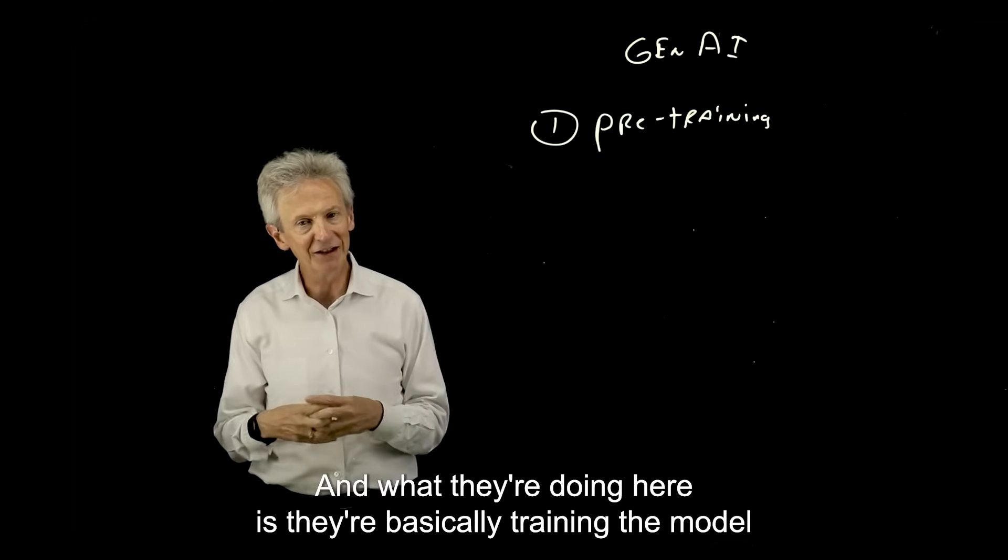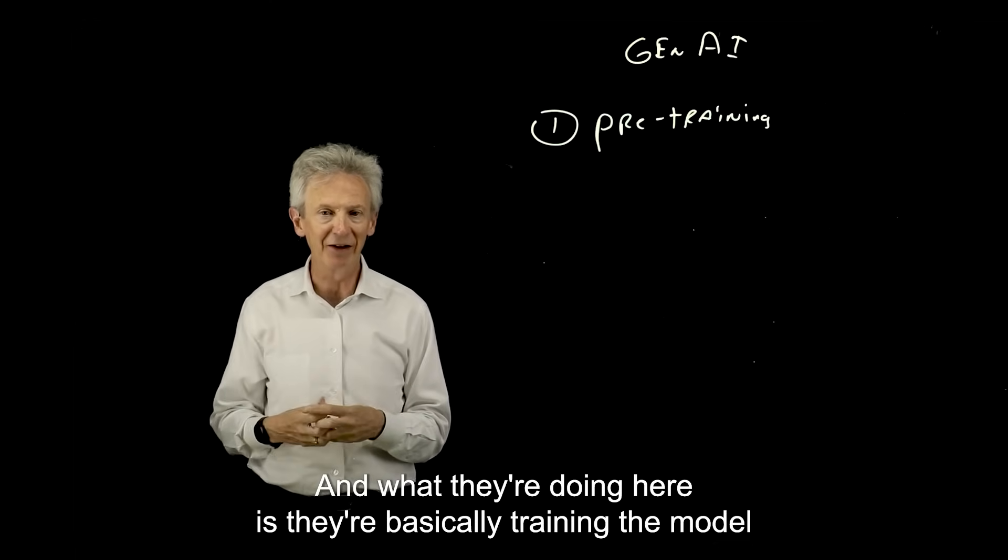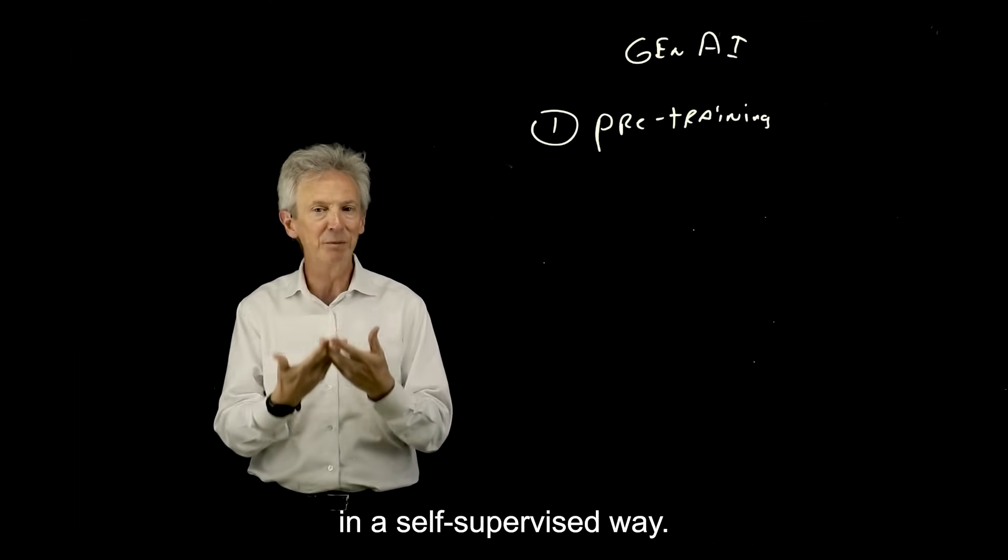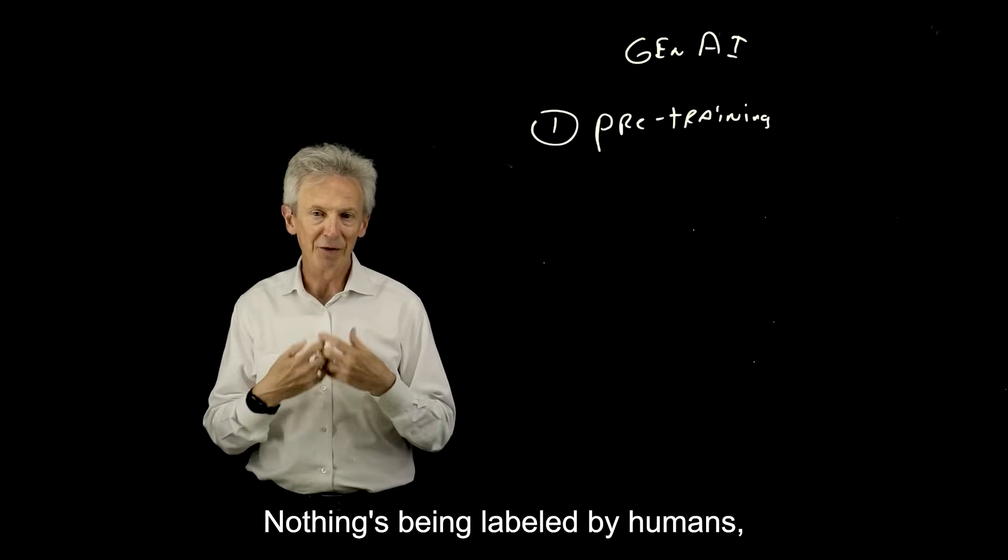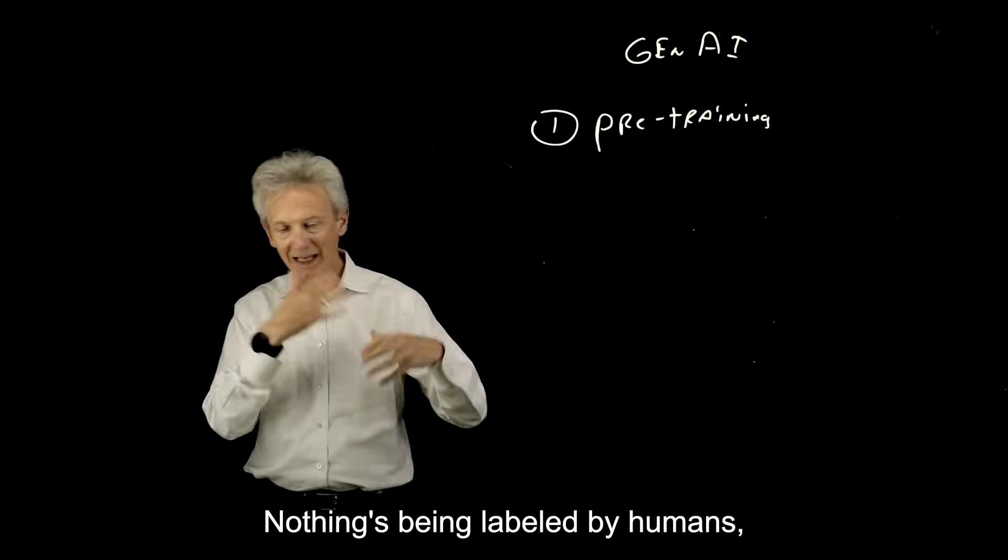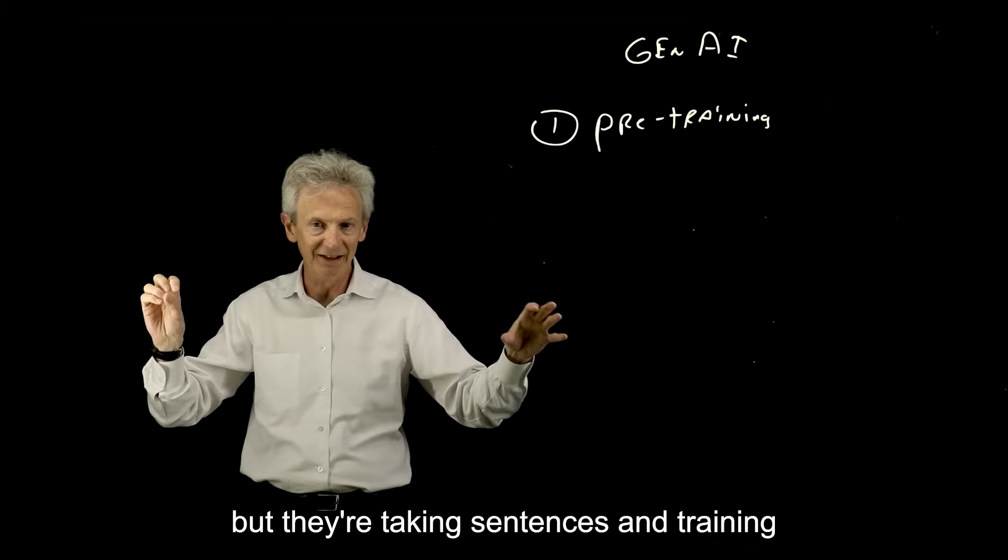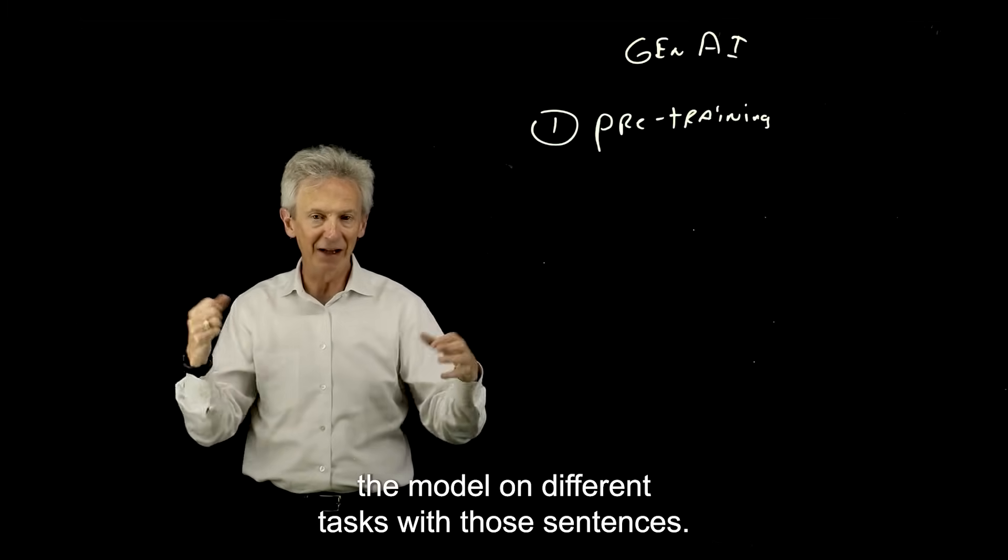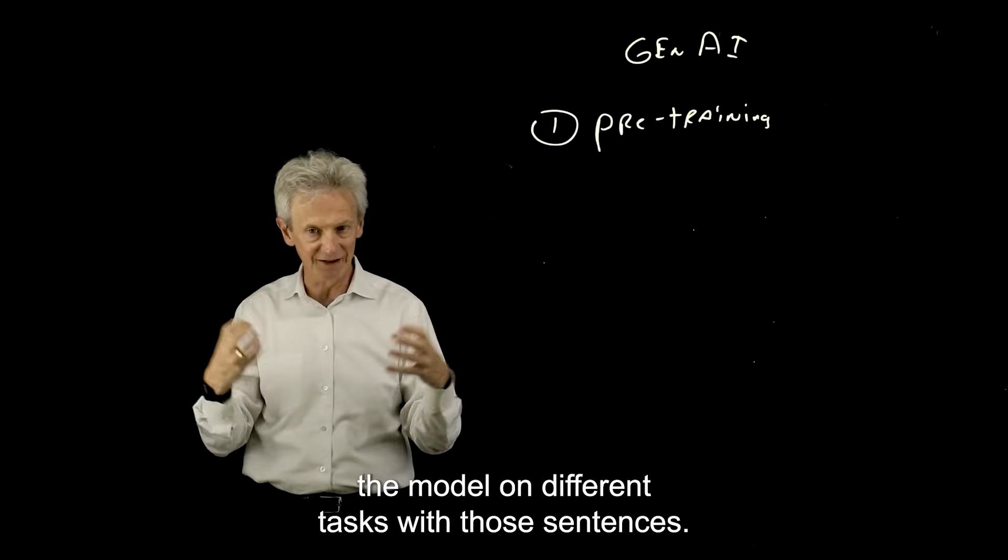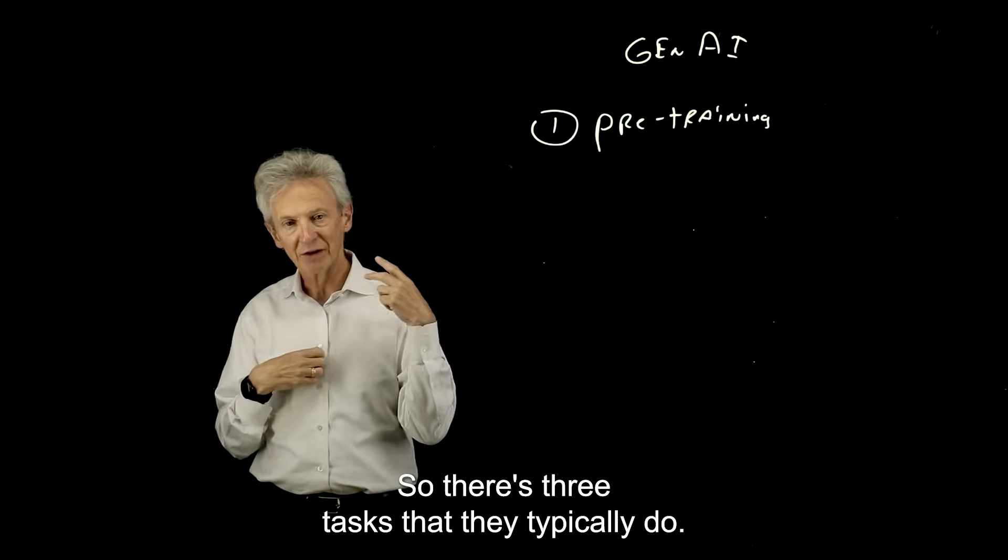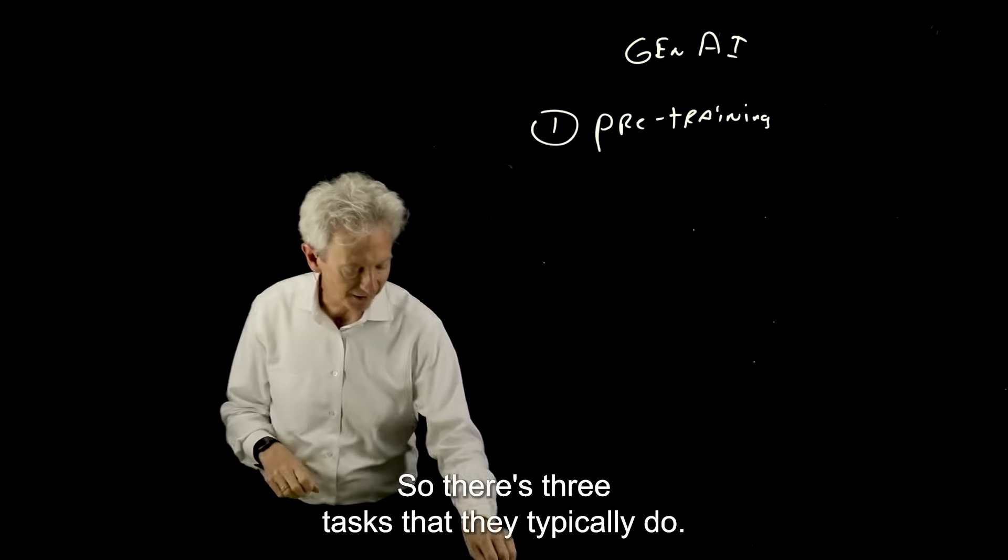And what they're doing here is they're basically training the model in a self-supervised way. So the model is not being, nothing's being labeled by humans, but they're taking sentences and training the model on different tasks with those sentences. So there's three tasks that they typically do.